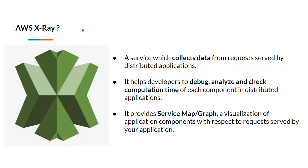So what is AWS X-Ray? AWS X-Ray is a service which collects data from requests served via our distributed applications. A distributed application in the cloud has many components like API Gateway, Load Balancer, DynamoDB, Lambda function, SQS, SES for email or notifications, SNS. So these are all independent components and AWS X-Ray service collects data from all of these components, and this information helps developers to debug, analyze and check computation time of each component in the application.